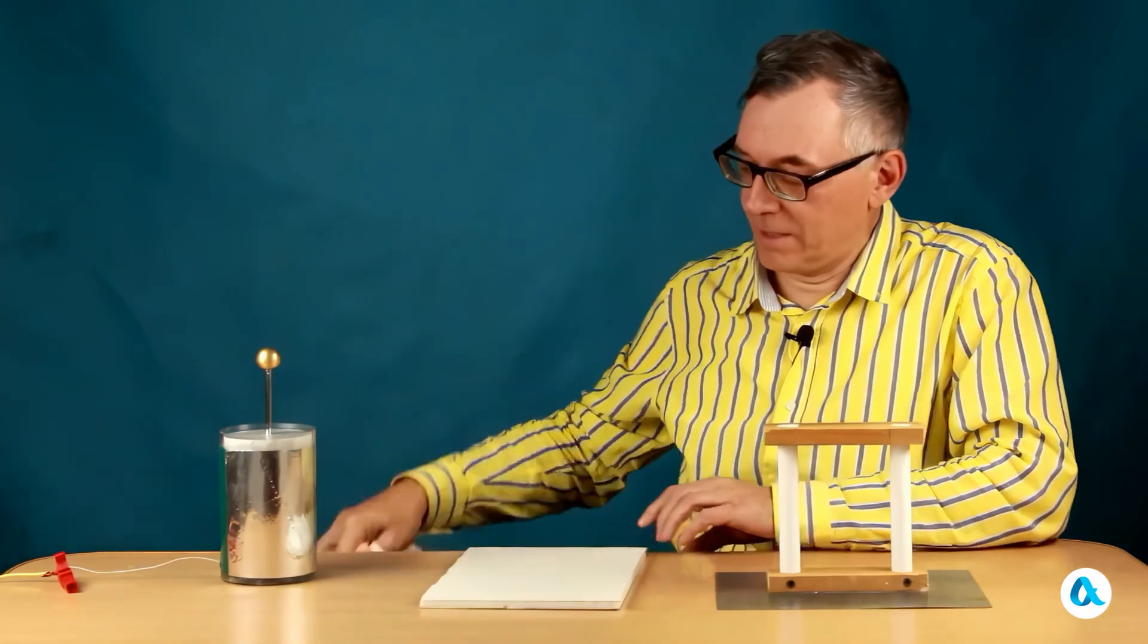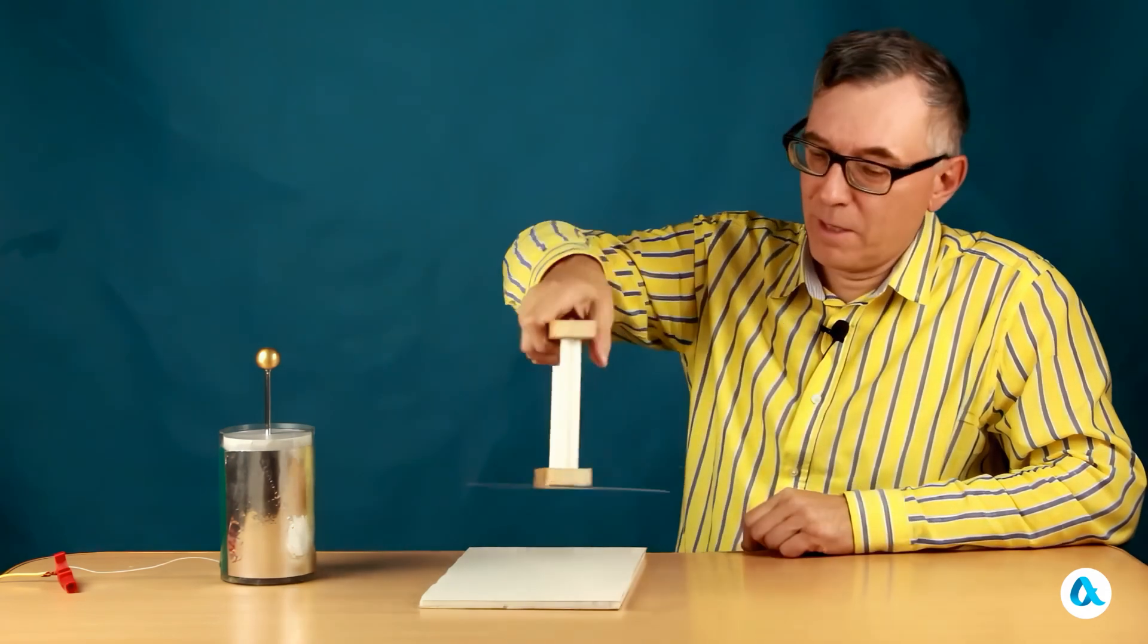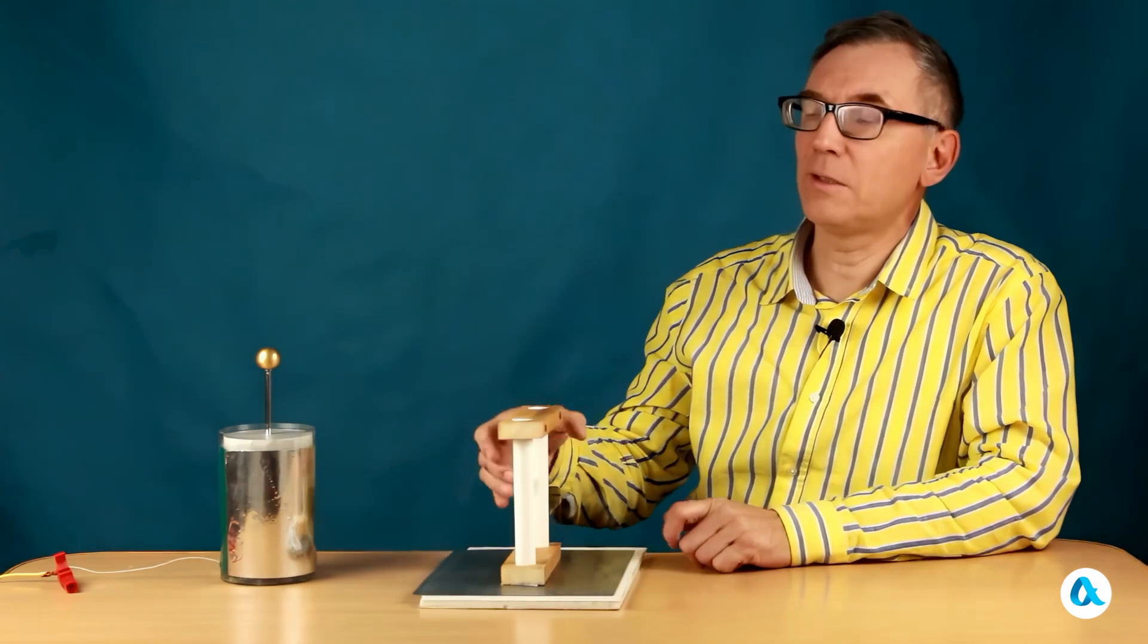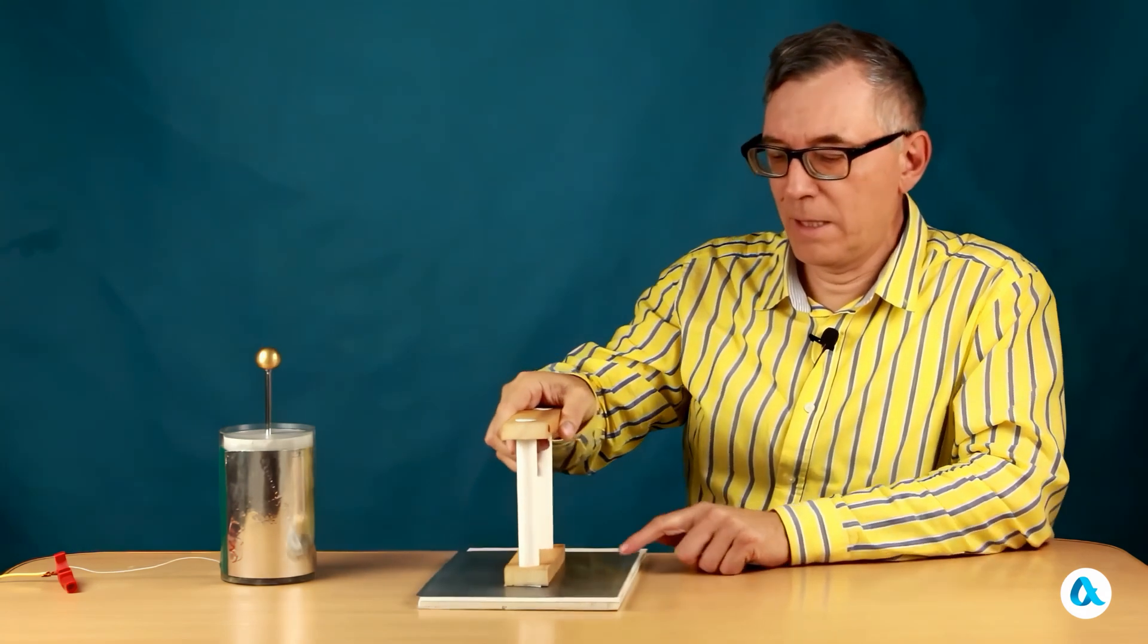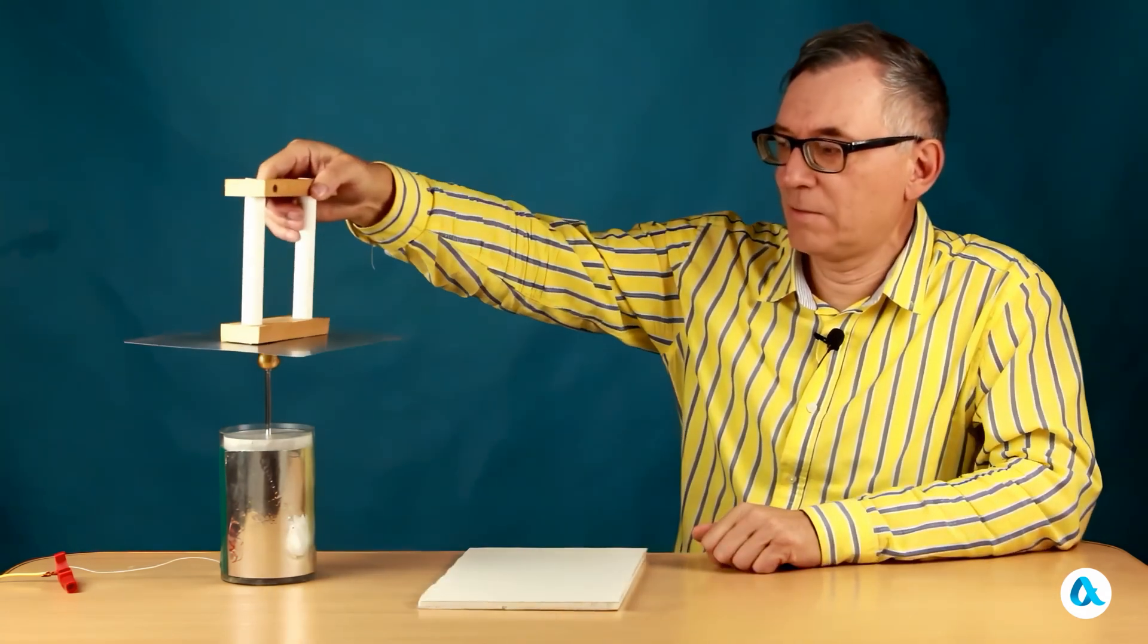And now I am rubbing the plastic plate again, placing a metal one on it, grounding it, and transferring the charge to the Leiden jar. And I repeat this action over and over again.